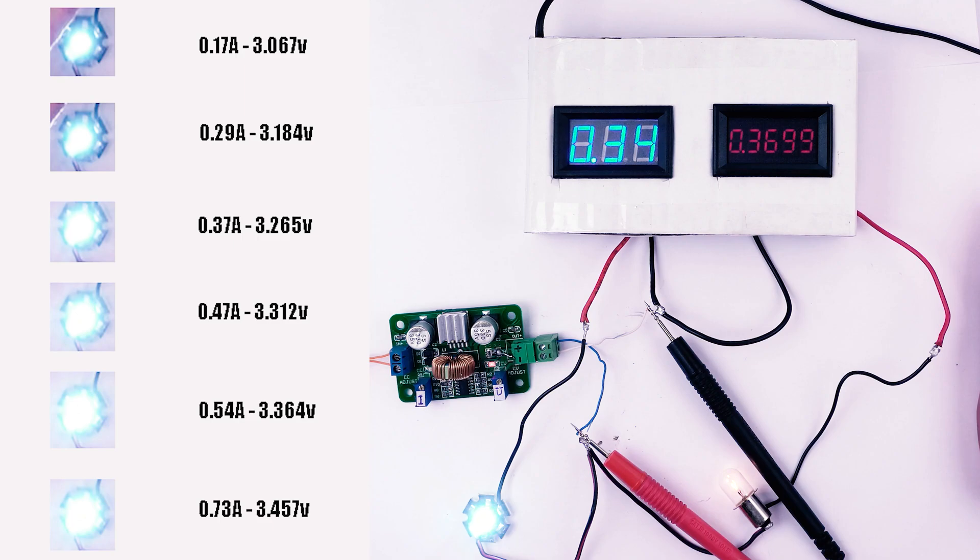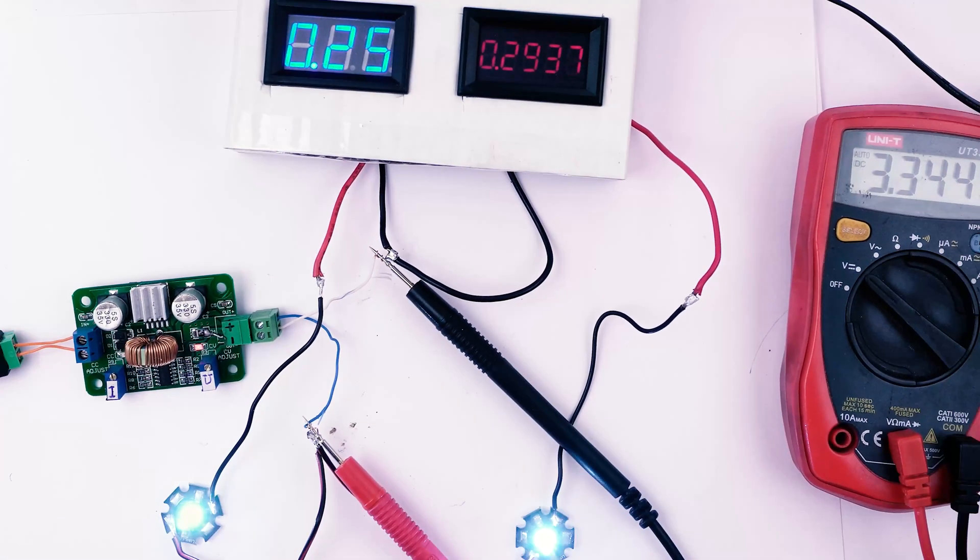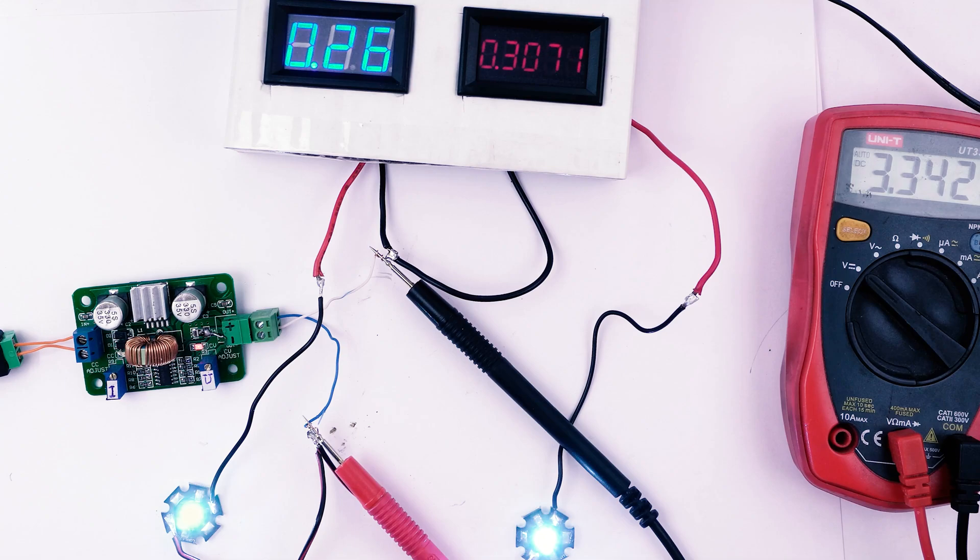Let's replace the light bulb with another LED. What do we see? Both LEDs are powered from the same source, so they get the same voltage, 3.3 volts.